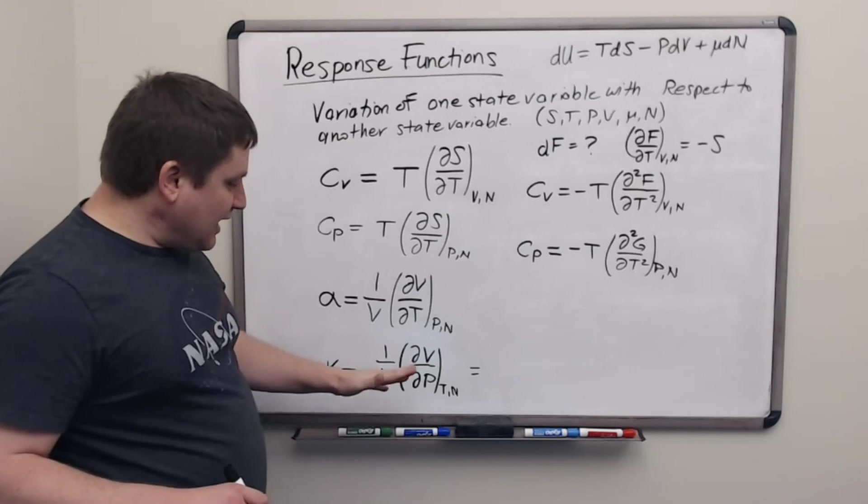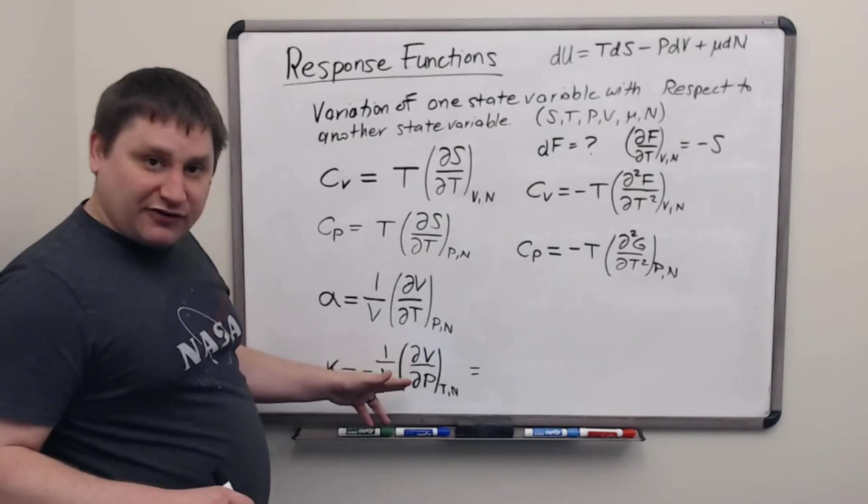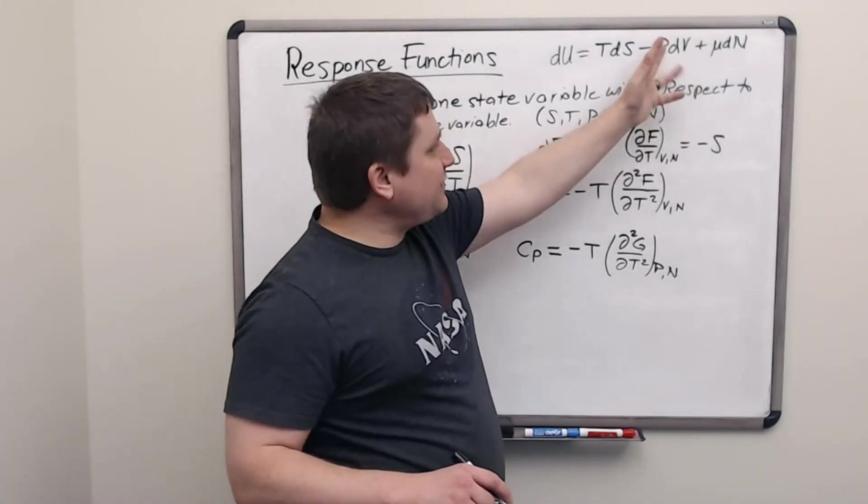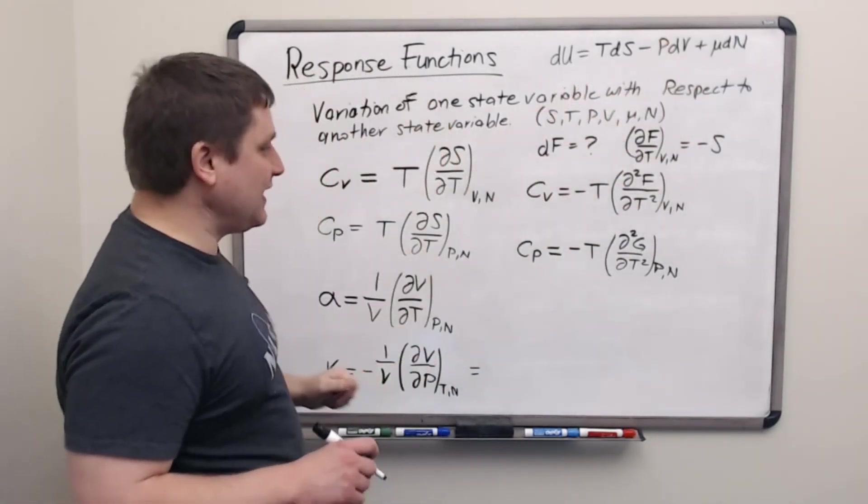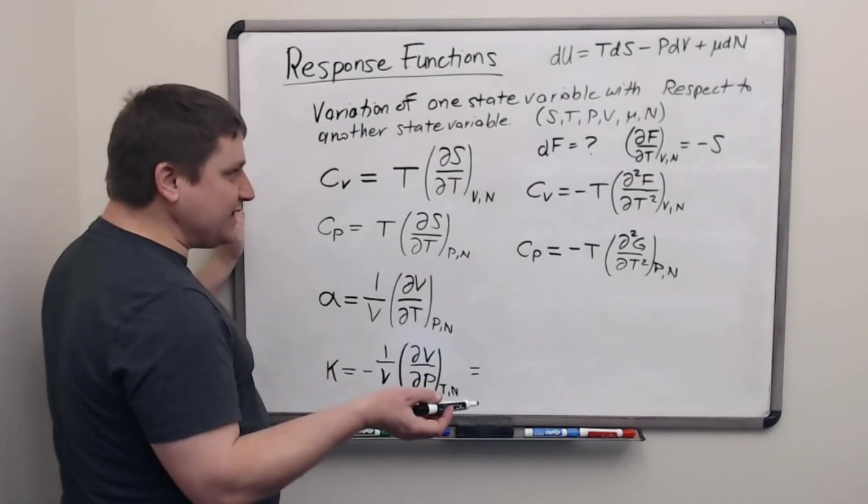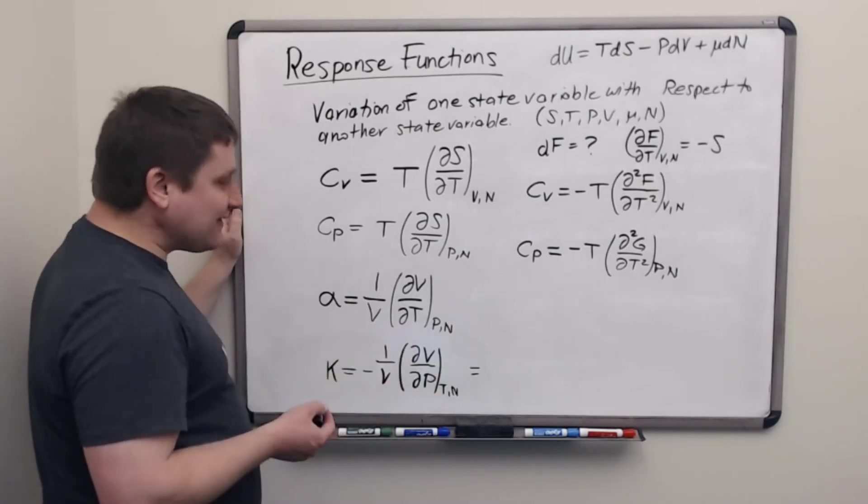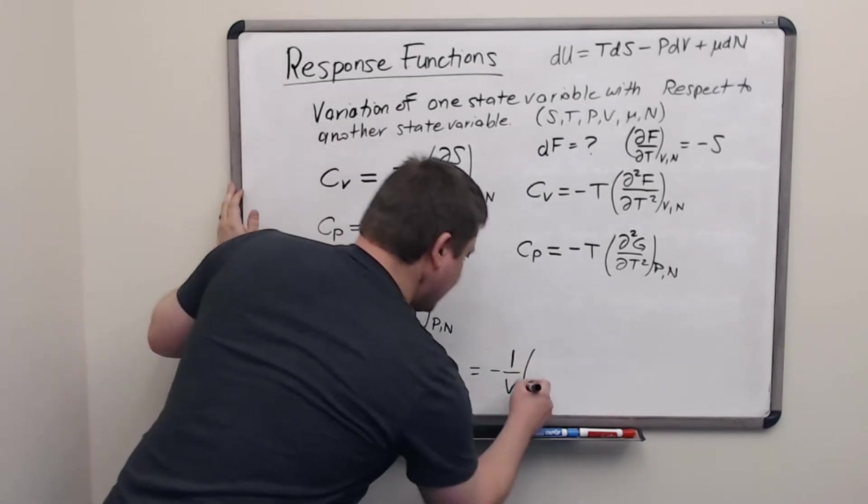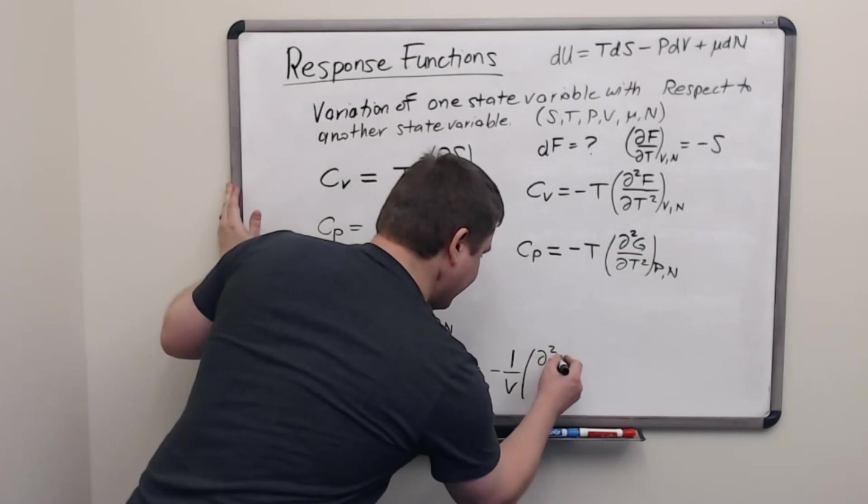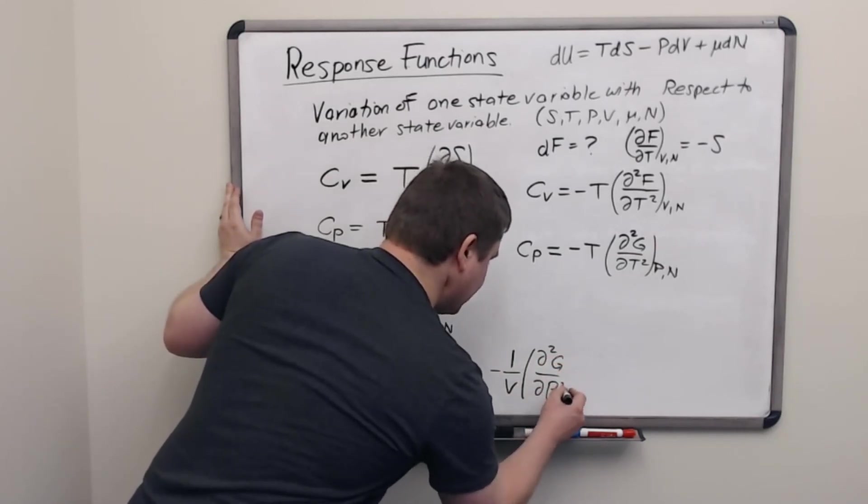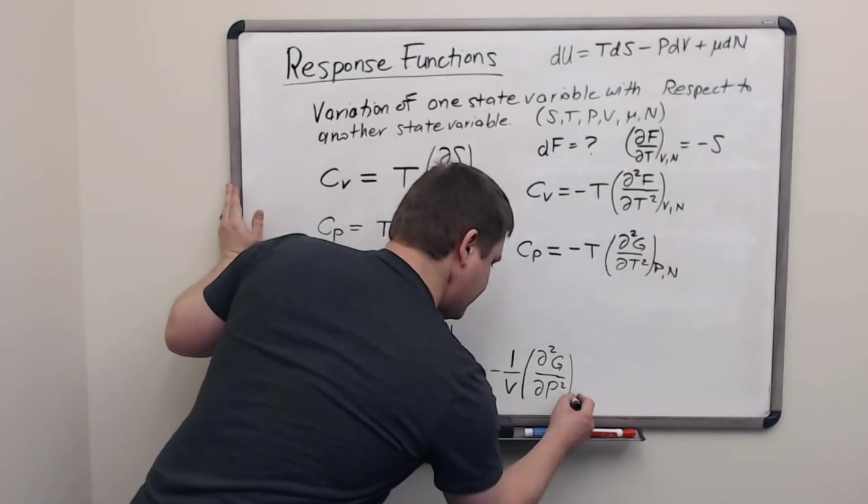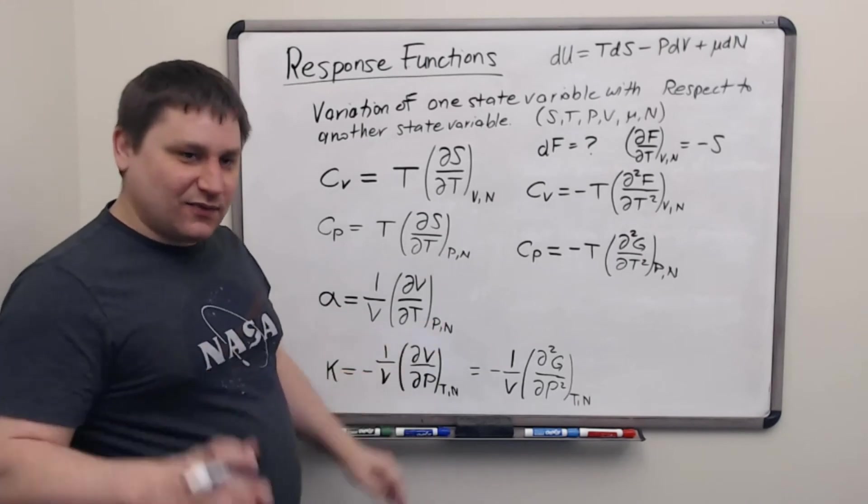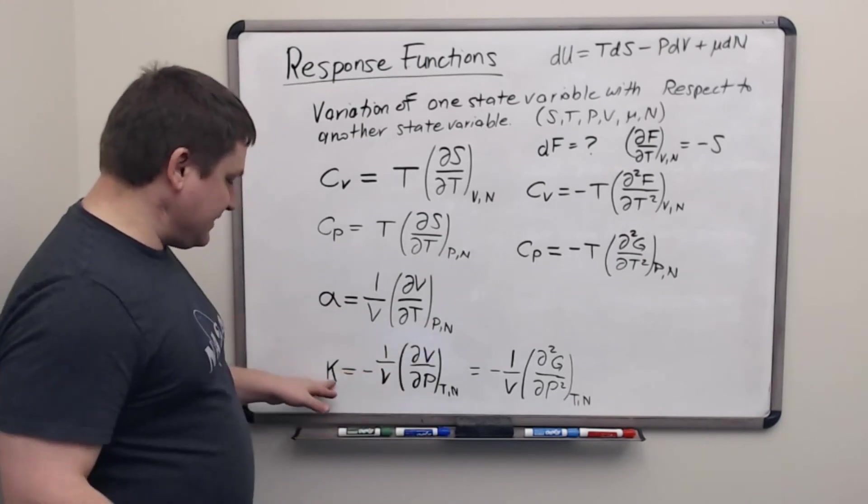And for Gibbs, I'm doing a derivative with respect to pressure to get volume. Normally, this term is negative. Since I flip from V to P, then I'll get that positive sign. So dG/dP is going to be positive volume. So I'll have a minus 1/V here from the definition. And then the second derivative of G with respect to pressure. All right, so another relationship between this abstract thing and a concrete thing.